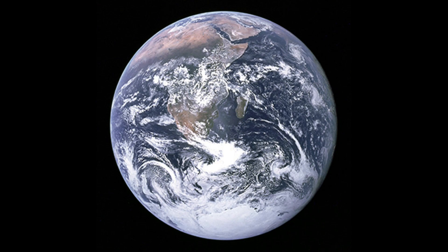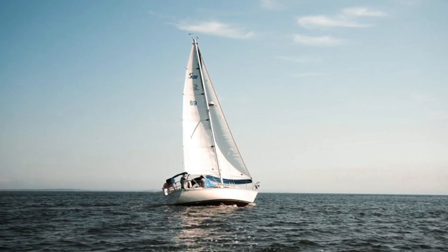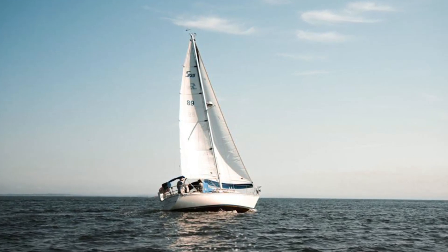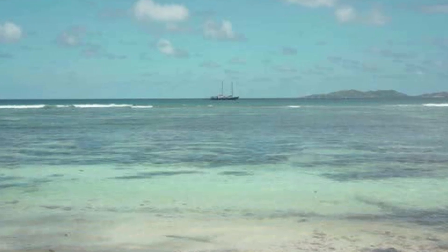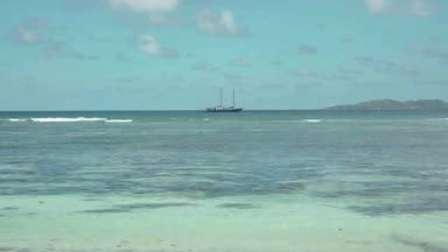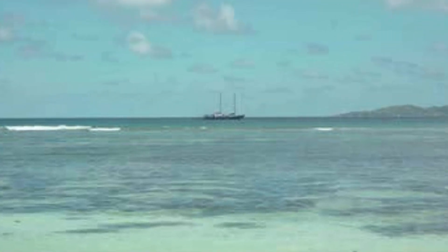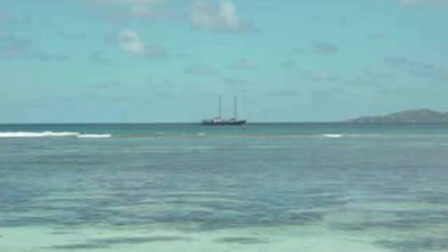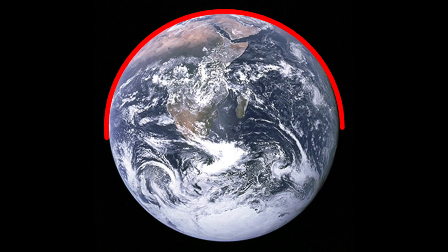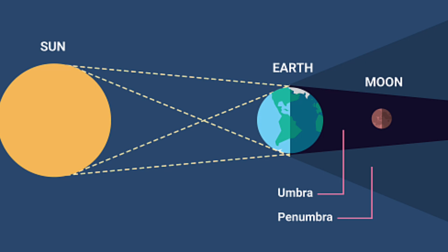Photographs of the Earth taken from space also show that the Earth is round. If you observe a boat or a ship sailing towards the shore, you will first see the topmost part of its mast. A little later you will see the whole mast and the upper portion of the ship. After some time, the entire ship will come into view. This is possible only because the Earth is round in shape.